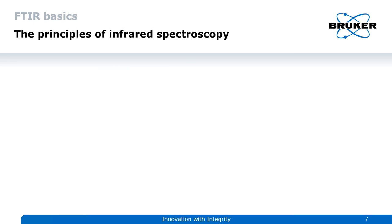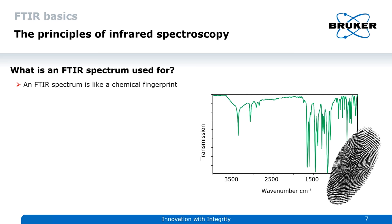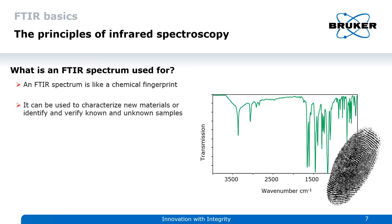But what can we do with it? A lot of things, actually. An FTIR spectrum is like a chemical fingerprint. This enables chemical identification of a variety of samples and is frequently used to characterize material properties and verify known and elucidate unknown samples.